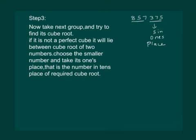So, let us try to find out the range. We know that 9 cube is 729 and 10 cube is 1000. So 857 will lie between 9 cube and 10 cube.